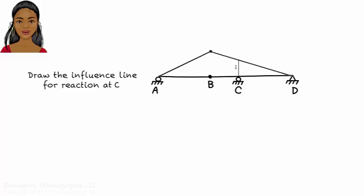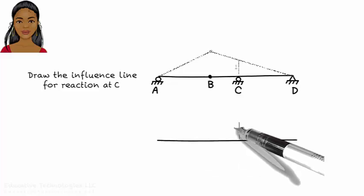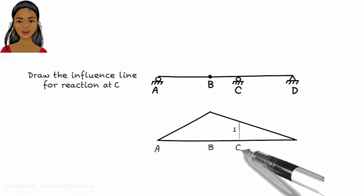Why does AB rotate? Because it is pin connected at A. Pins and rollers allow rotation. So the influence line for reaction at C looks like this.